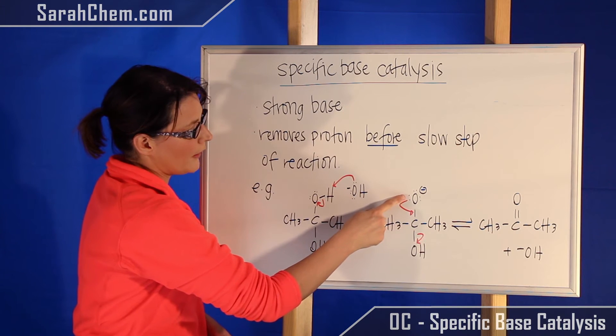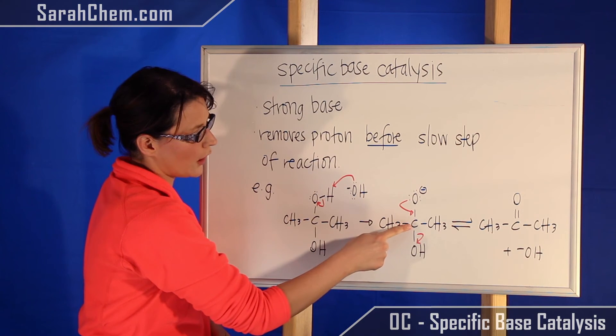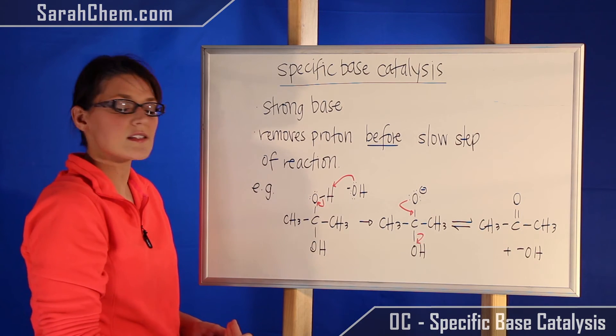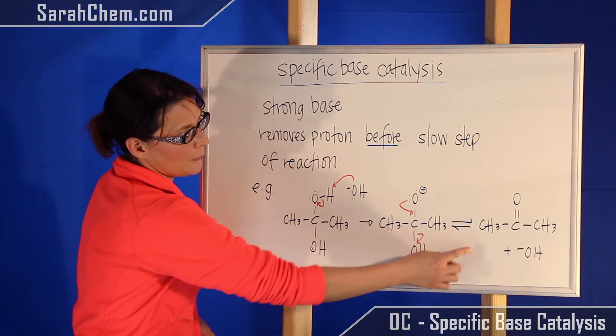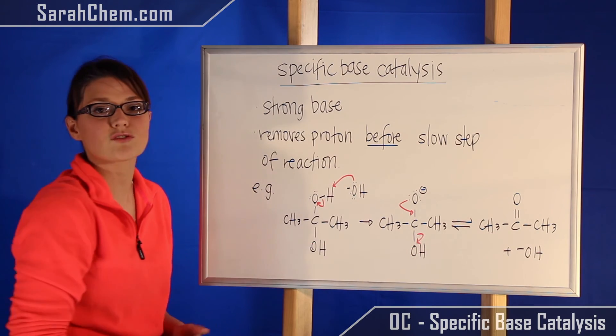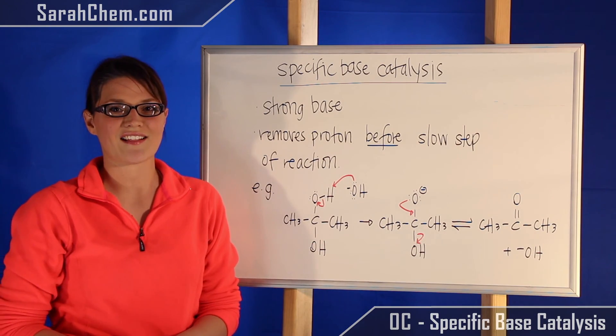So we're going to see a lone pair coming and pushing down to form the carbonyl double bond. And so that carbon does not exceed the octet, we will kick off this OH group here. So our final product will be this ketone and the hydroxide. And that's what's happening in specific base catalysis.